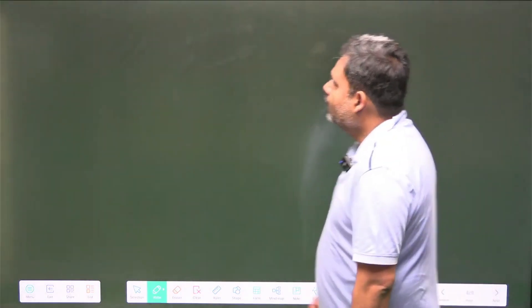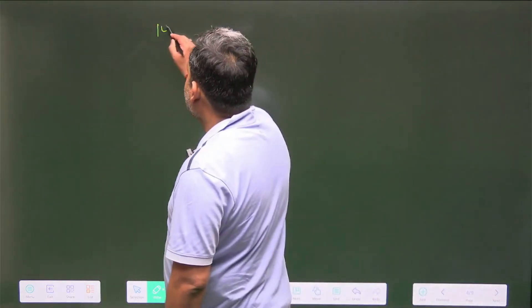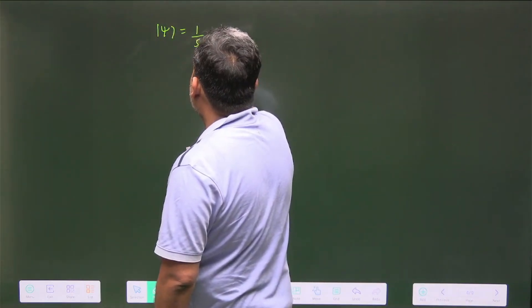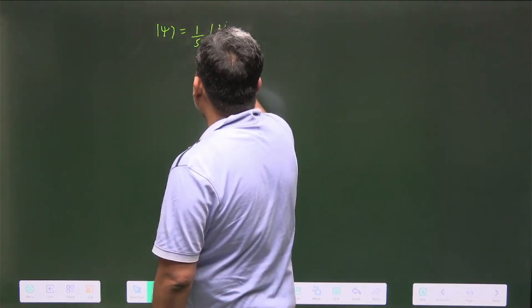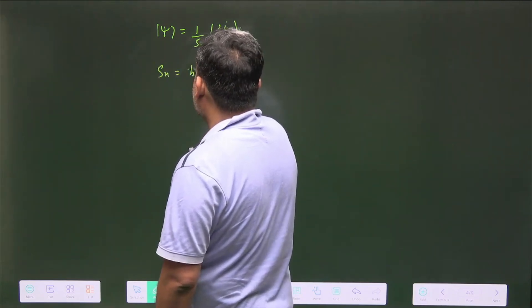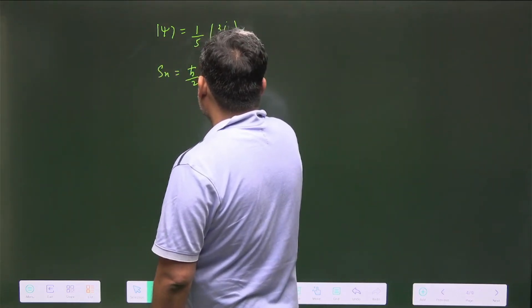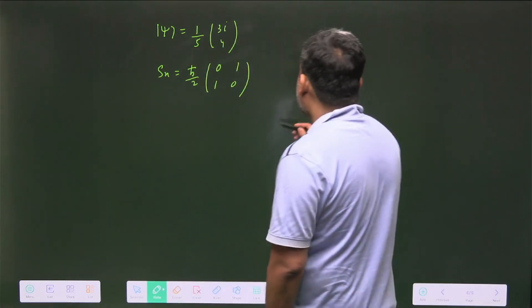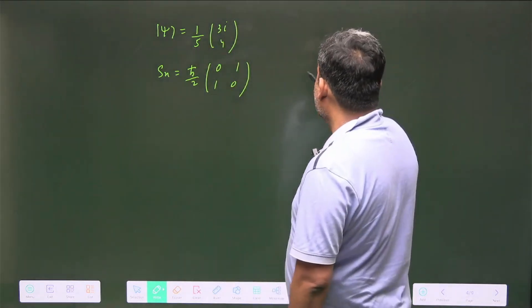What is my Sx operator? Sx operator is (ℏ/2)[[0,1],[1,0]]. What will be the eigenvalue? The eigenvalue is ℏ/2 and -ℏ/2.